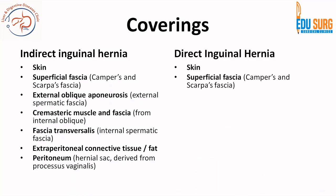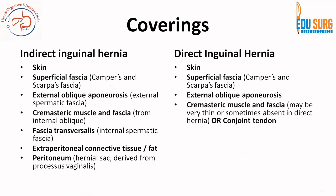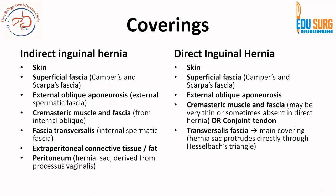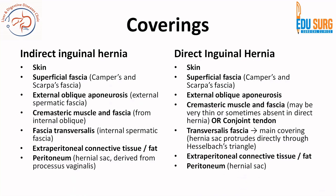In direct inguinal hernia, again it is skin, superficial fascia, external oblique aponeurosis, cremasteric fascia and muscle — but this may be thin or absent in direct hernia, or you may have conjoined tendon if the hernia is coming through that part. Transversalis fascia is the main covering in direct inguinal hernia because it protrudes directly through Hesselbach's triangle. Then again you have the extraperitoneal connective tissue and then the peritoneum, which is the hernial sac. If you know the previous slide, this becomes very easy.